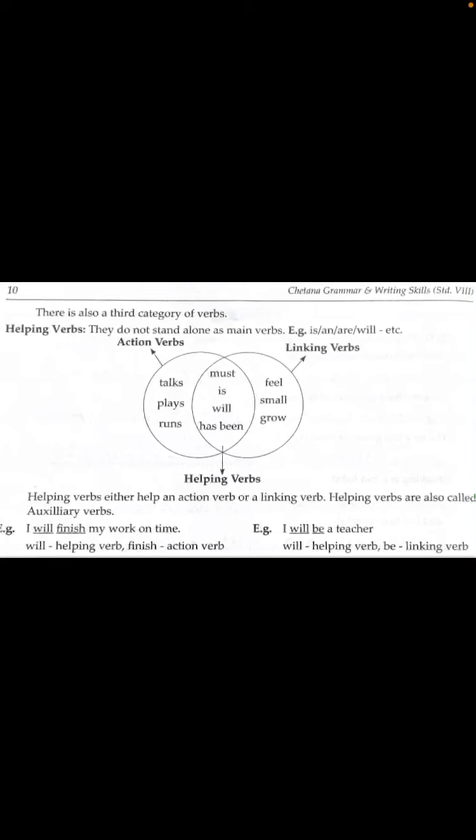Another name for helping verb is auxiliary verb. A few examples of auxiliary verbs are: must, is, will, has, been. All these auxiliary verbs are used before a main verb — that is, an action verb or a linking verb — to help or to give a particular meaning. So helping verbs help the main verb, and their other name is auxiliary verb.